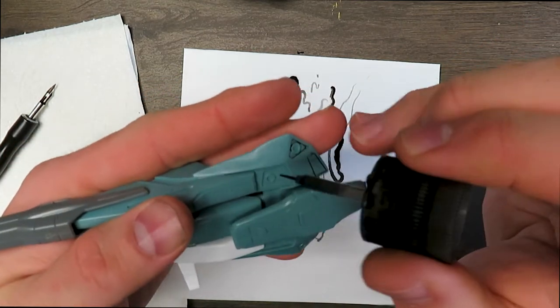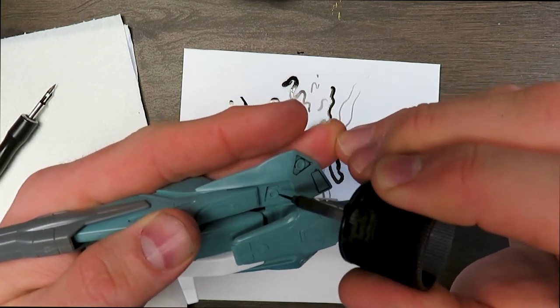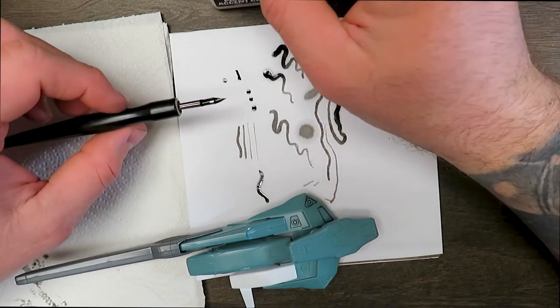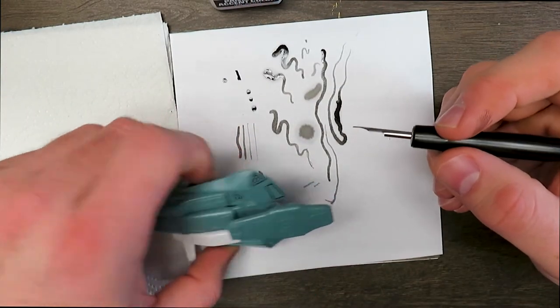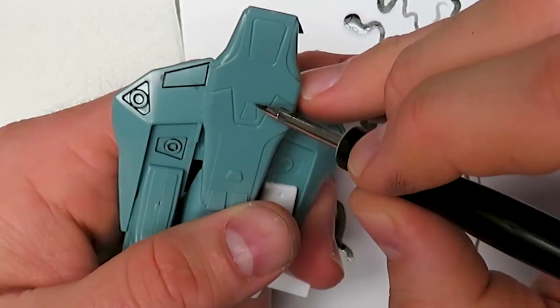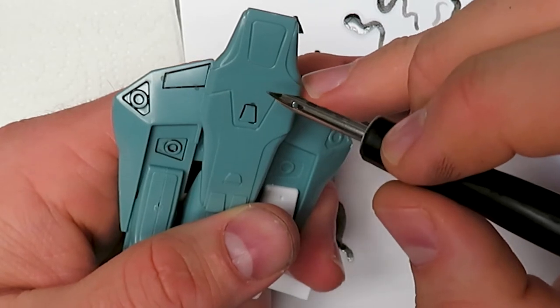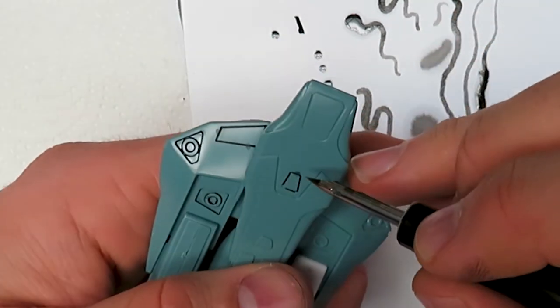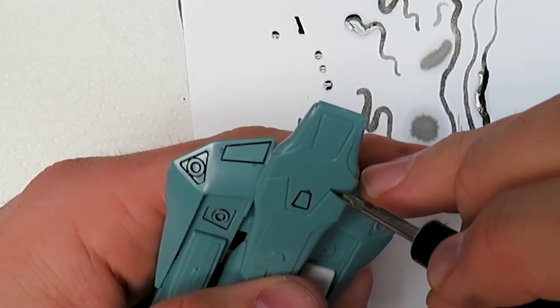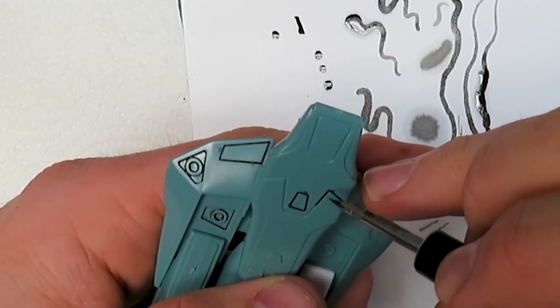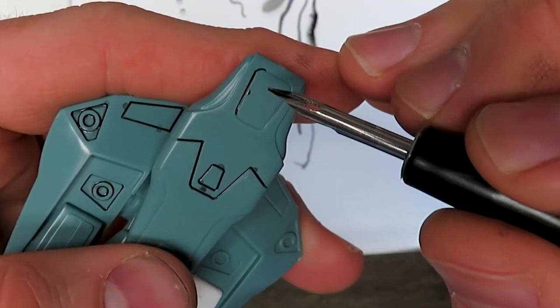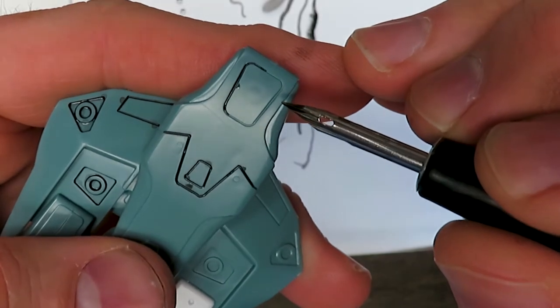So I'm gonna load this up and the great thing about enamels like this is even if you mess it up you can just go back later with some mineral spirits and clean it up. So here we go. That seemed to work okay. Oh yeah you can see that capillary action just takes that enamel all around the surface.